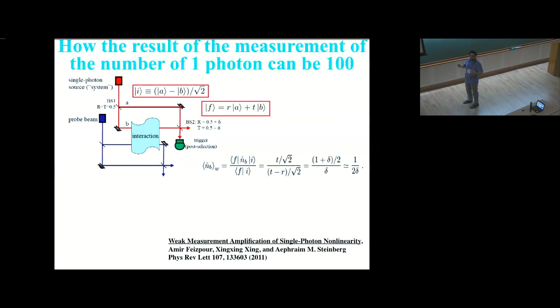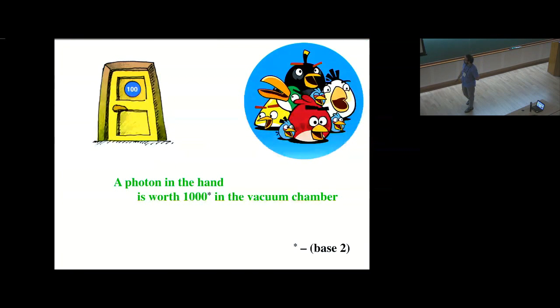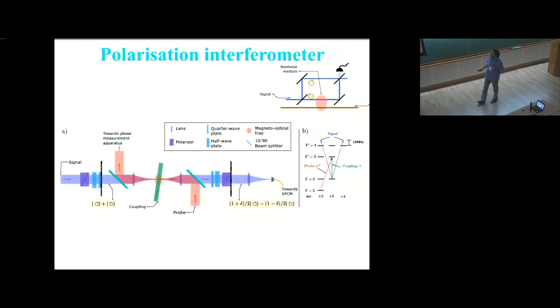Well, if we do that and we ask, what phase shift should we see on the probe? The answer is given by the weak value. The weak value is the N_B operator, number of photons in mode B, sandwiched between I and F. That just gives T over root 2 over T minus R over root 2, this imbalance in the interferometer that can be arbitrarily small. We call it delta. So this number goes as 1 over 2 delta. It can be arbitrarily large. And that's true even if you have only a single signal photon. So a photon in the hand is worth a thousand in the bush, basically. And this is how the experiment was done. We again focus two beams onto the atoms, a probe and a signal. But now the signal contains two different polarizations.